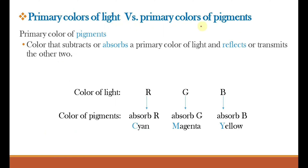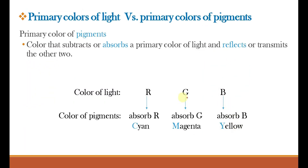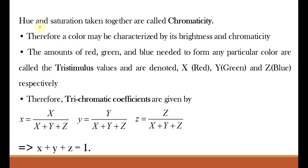The difference between primary colors of light versus primary colors of pigment is that primary colors of pigment subtract or absorb a primary color of light and reflect or transmit the other two. For example, a pigment absorbs red and transmits cyan (green plus blue); absorbs blue and transmits yellow; absorbs green and transmits magenta. Brightness is also known as luminance, and hue and saturation together are called chromaticity, chroma, or chrominance.